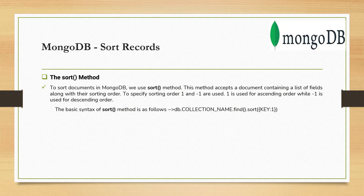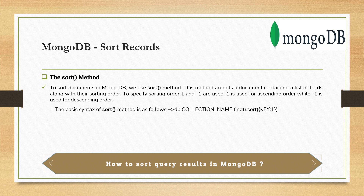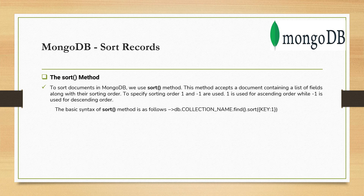To sort documents in MongoDB, we use the sort method. This method accepts a document containing a list of fields along with their sorting order. To specify sorting order, we use either 1 or -1. Specifying 1 with a particular key will sort documents in ascending order, while -1 is used for descending order.